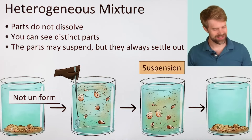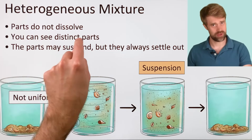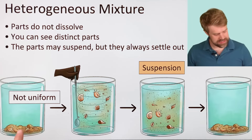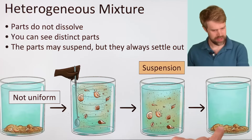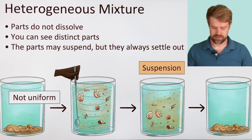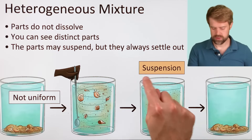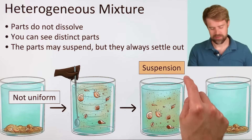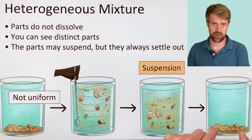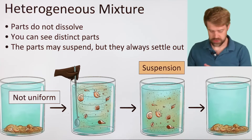On the other hand, in a heterogeneous mixture, the parts don't dissolve. Here is sand in water — you can see the distinct parts. If you stir things up, the different substances may hang in the water for a moment, making what's called a suspension. But the parts always settle back out again, and the particles here are relatively big — you can see them.